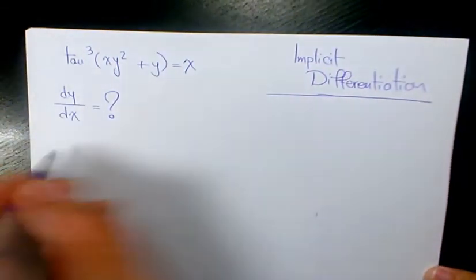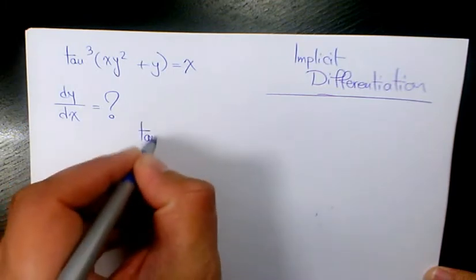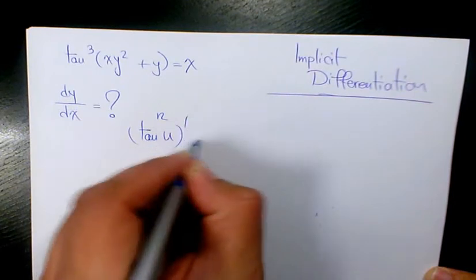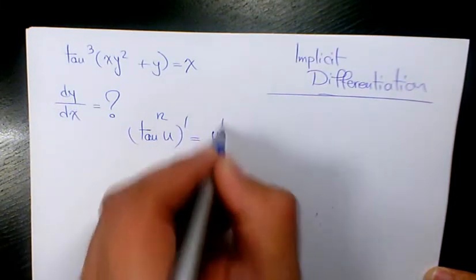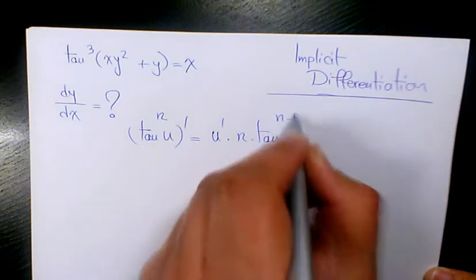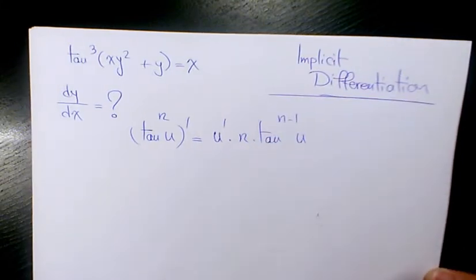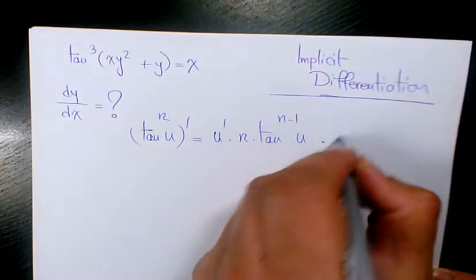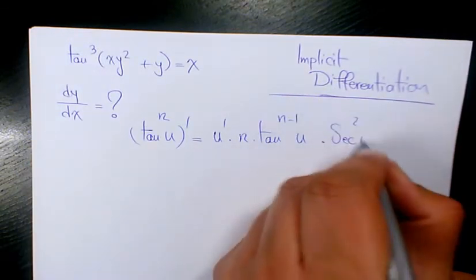The derivative of this part, we know the derivative of tan to the power n of u, if u is a function of x, is going to be u prime times n times tan to the power n minus 1 of u times secant squared u.